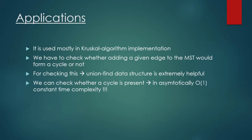The applications of disjoint sets are mostly in Kruskal's algorithm implementation. We have to check whether adding a given edge to the minimum spanning tree would form a cycle or not. The union find data structure is extremely helpful because we can check whether a cycle is present in O(1) constant time complexity. Because of path compression, nodes and vertices connect to the representative directly, making find asymptotically O(1).